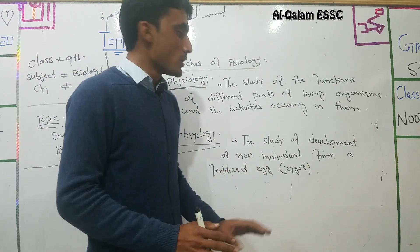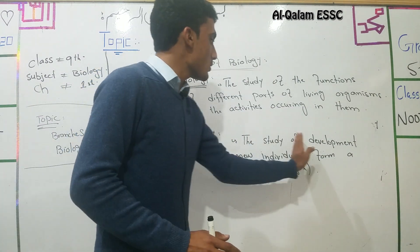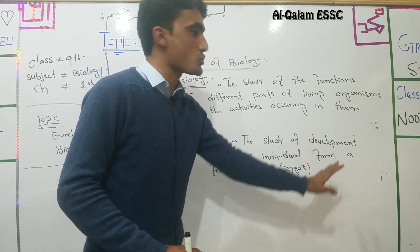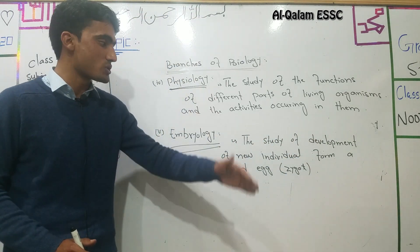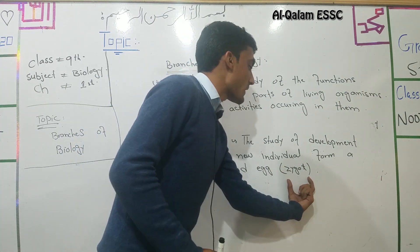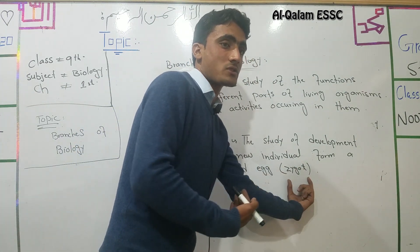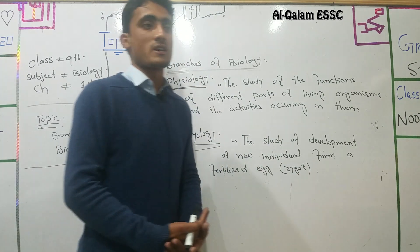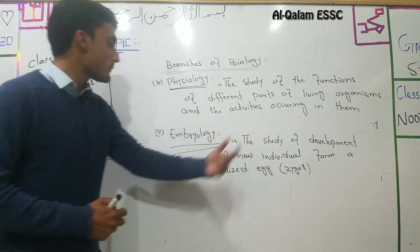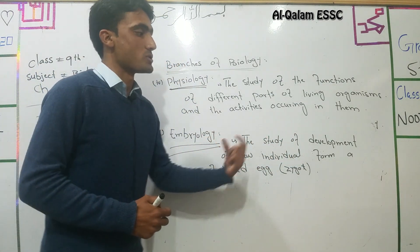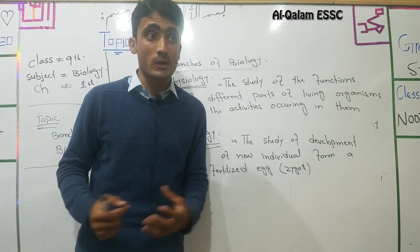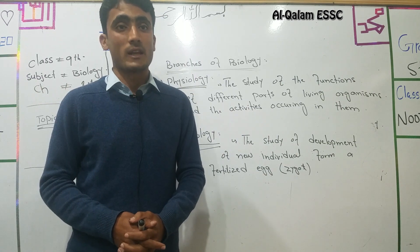The study of the development of a new individual from a fertilized egg — from a zygote — the embryo develops, and the study of that embryo is called Embryology. So far we have covered five branches of biology. There are approximately twelve branches of biology in total.